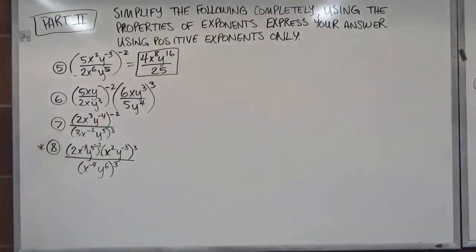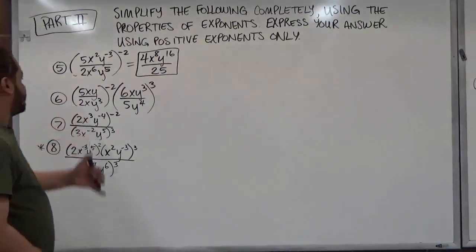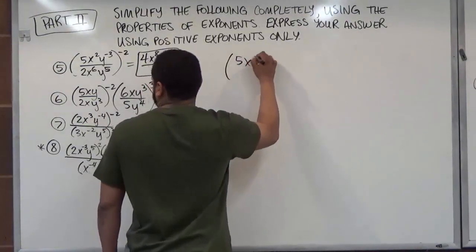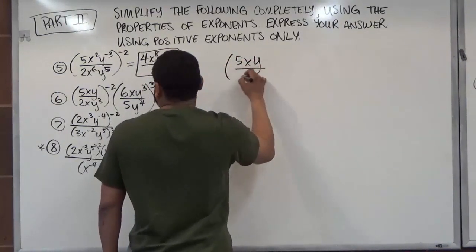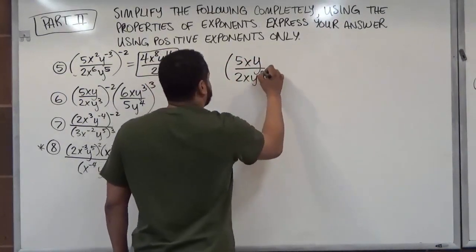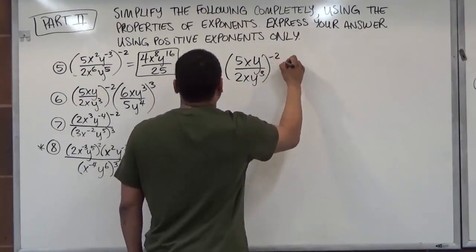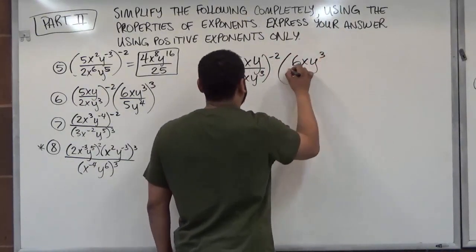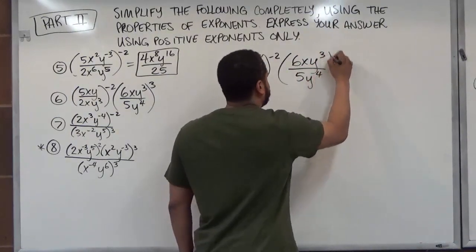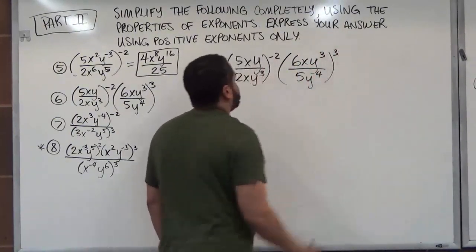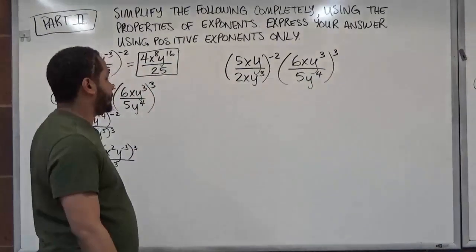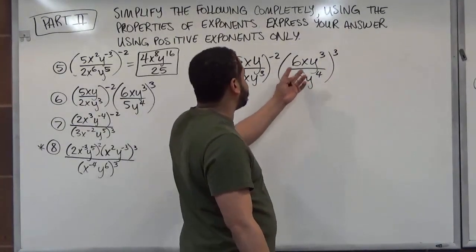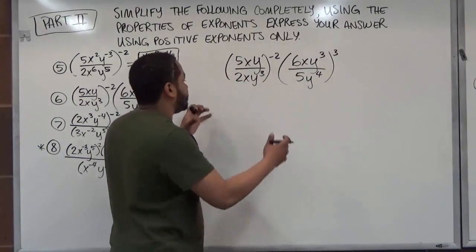Continuing on to the next problem, which is number 6. We have 5xy over 2xy cubed to the negative second power, multiplying by 6xy to the third over 5y to the fourth power, to the power of 3. We're going to use the rules from before, dealing with the fractions first inside the parentheses because of the order of operations.